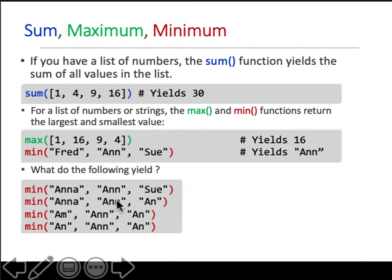In this case, minimum of Anna and And Sue is what? Clearly Ann, because this letter is same as this, this letter is same, this letter is same, but now this one ends, so this is the smaller one than this one. Similar logic for the second one, it yields Ann with a single n. The third one is Am because m is smaller than n. What about this final one?